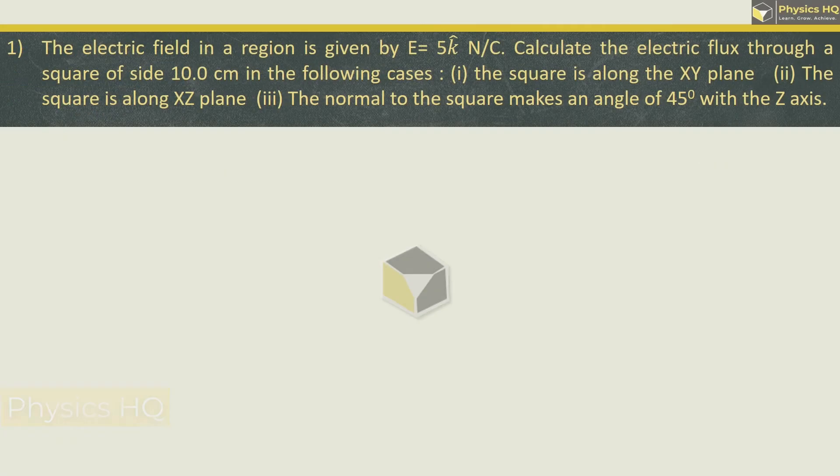Let us start with the first sum. The electric field in a region is given by 5K Newton per Coulomb. Here is the K vector. It means electric field is along the Z axis. Calculate the electric flux through a square of side 10 cm in the following cases. First, let us understand how to calculate the flux. Flux is given by electric field into the area into cos of theta, where theta is angle between electric field and area vector.